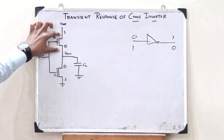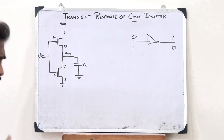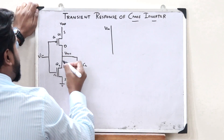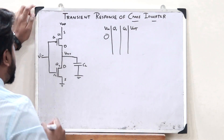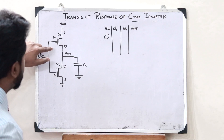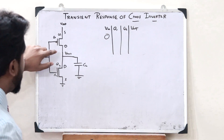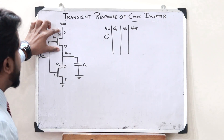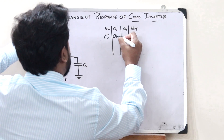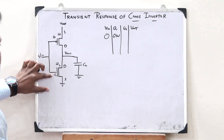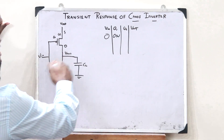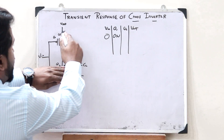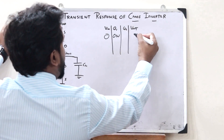This forms the pull-up network and this forms the pull-down network. Taking this transistor as Q1 and this transistor as Q2 — if we give 0 as the input, the input is 0 at both gates. In the case of a PMOS transistor, when the input at the gate is 0, it turns on, so Q1 is on. But on the NMOS side, when we give 0 as the input, that transistor turns off, so the circuit is open-circuited. Therefore, whatever comes from VDD we get at the output, and we get an output of 1.